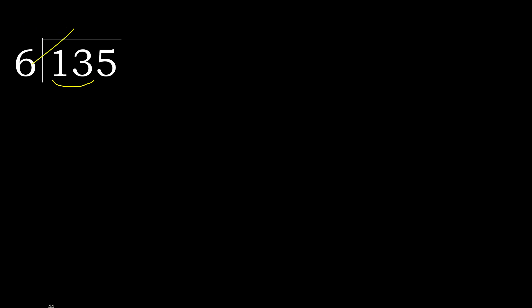6 multiplied by which number is nearest to 13 but not greater. 6 multiplied by 3 is 18 — 18 is greater. Multiply by 2: 6 multiplied by 2 is 12. 12 is not greater, ok. Subtract: 13 minus 12 is 1.